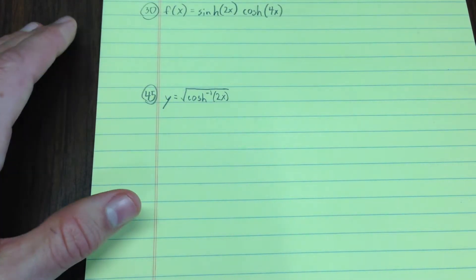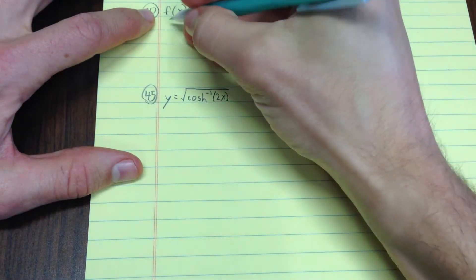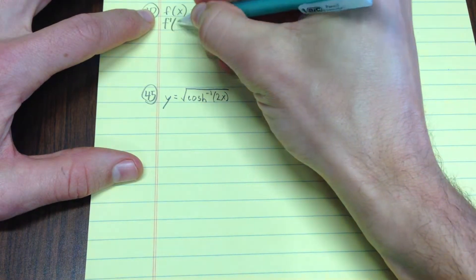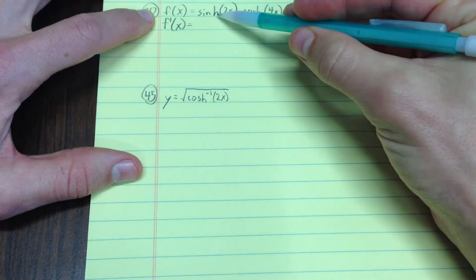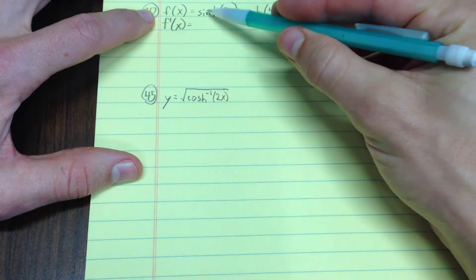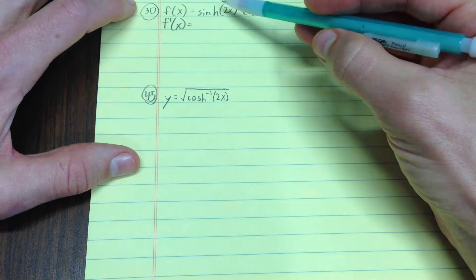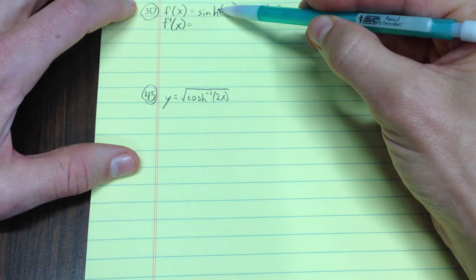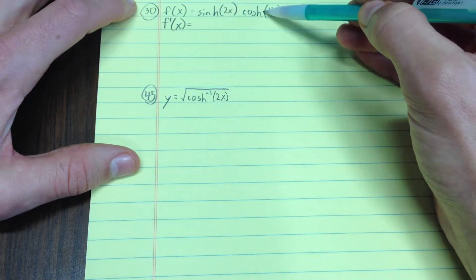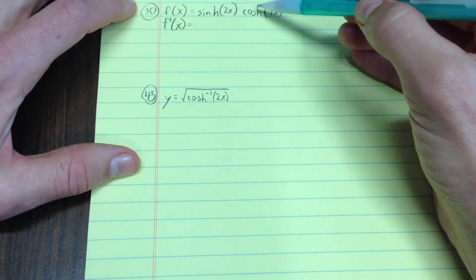Okay, so remember, first off, we have to consider what this is. This is the product of two functions, so I'm going to use the product rule. The derivative of the product is derivative of the first times the second plus the first times the derivative of the second.